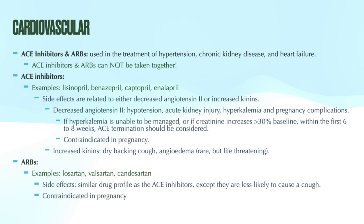Contraindications: if a patient is pregnant, they cannot take an ACE inhibitor or an ARB. For hypertension in pregnant patients, labetalol is first line — that is the one case where a beta blocker is first line for hypertension. Methyldopa and nifedipine are also options. ACE inhibitors are also contraindicated in patients with a history of angioedema and in patients concurrently taking an ARB. ACE inhibitors and ARBs cannot be used together — they have an increased risk of adverse events, potentially including increased risk of cancers.